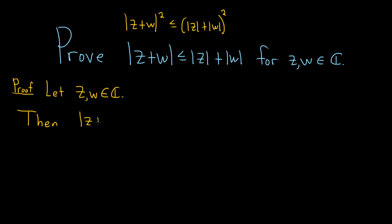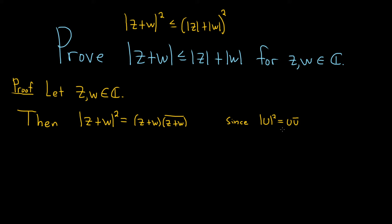We have the modulus of z plus w, squared. It turns out when you have the modulus of a complex number — in this case z plus w — and it's squared, it's equal to the complex number times the conjugate of the complex number. So since for any complex number u, if you take the modulus of it and you square it, you get u times the conjugate of u. That's true for all complex numbers.